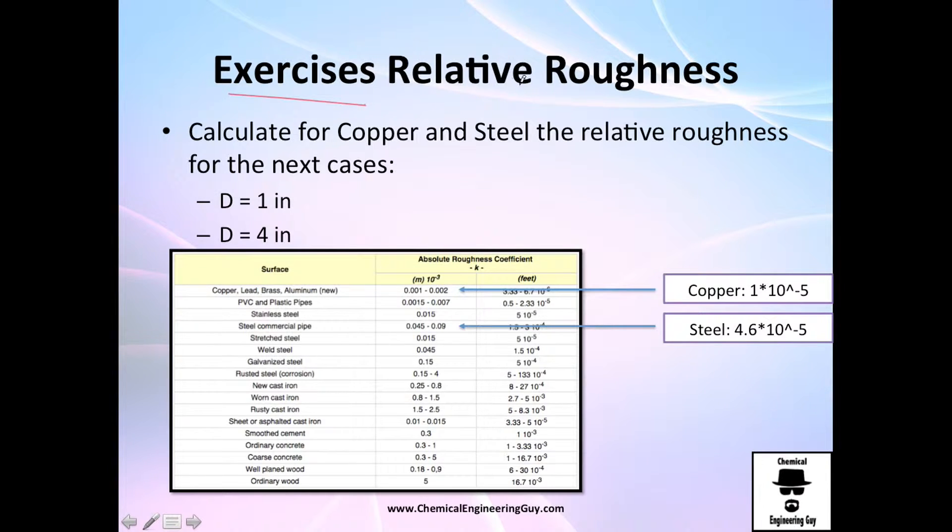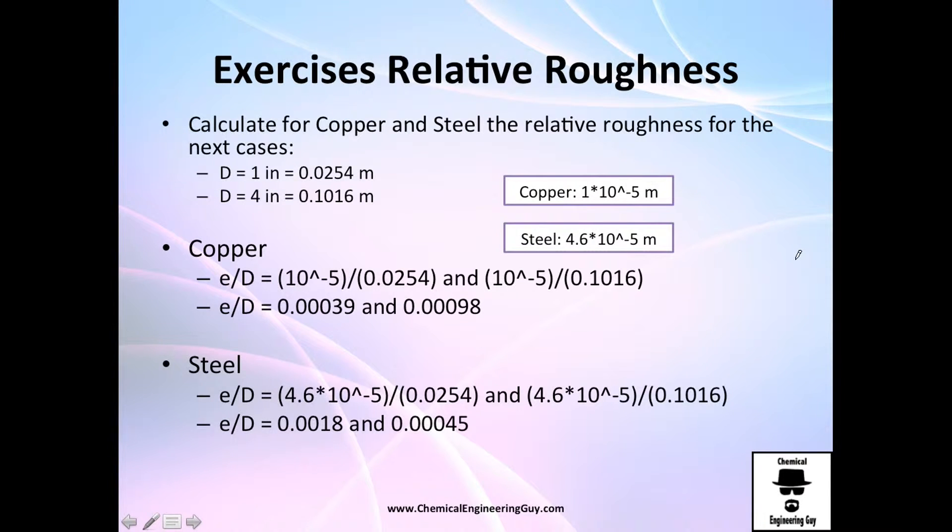Now let's actually do an exercise on relative roughness. Calculate the one of copper and steel relative roughness in these two cases. The diameter is 1 inch and the diameter is 4 inch. First things first, we need to find our material, which is copper. I found the roughness here, and steel, I have it here. Recall that these are in meters. For copper, the relative roughness is essentially just this one right here divided by the diameter of 1 inch, which is this in meters. For the one of 4 inches, just change this right here. I got this value and this value. Once again, the one with less diameter has the more relative roughness.